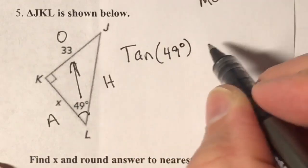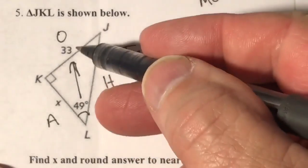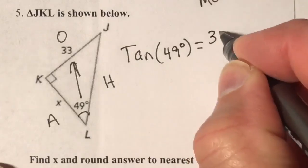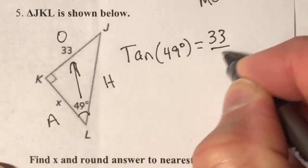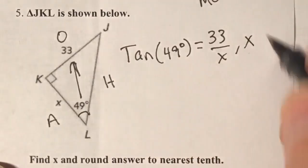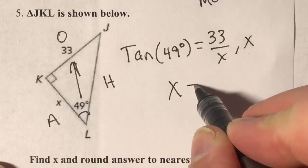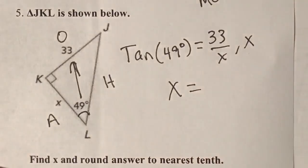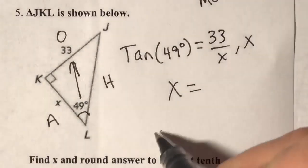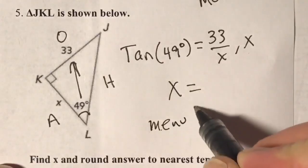Tan 49 degrees is equal to 33 over x. Go ahead and use menu 3, 1 on the calculator.